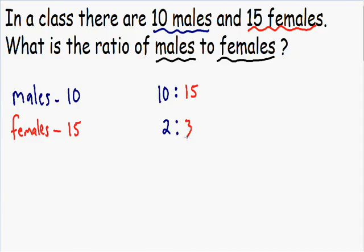There are also other ways of expressing the ratio. You can express it as a fraction — 2 over 3 — meaning for every 2 males there are 3 females. Or you can write it using words: 2 to 3. These are all acceptable ways of expressing that for every 2 males there are 3 females.